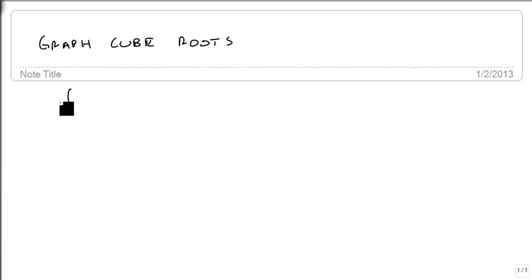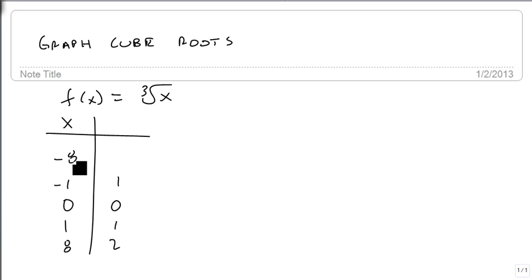So let's just start with our default, f(x) equals the cube root of x. For plotting points, we're going to put 0 in the center, and because it's a cube root we can go positive and negative, and then we're going to go to our next perfect cube, which is 8, and that's as far as we're going to go.